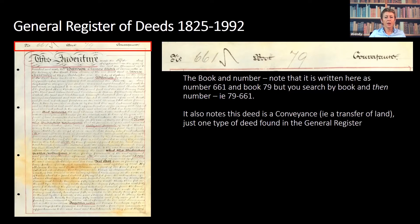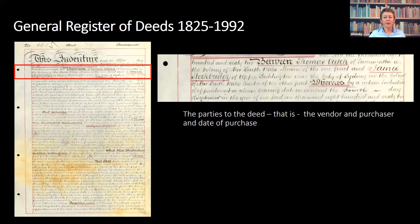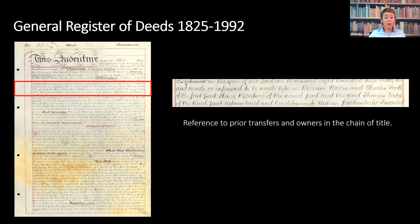On the right, it simply tells us that it's a conveyance — a transfer of land — which is just one of the types of deeds you'll find in the general register. The next paragraph talks about the parties to the deed: Thomas Veitch, who lives at Parramatta and is a mason, is on the first part — that is, the vendor. On the second part, or the purchaser, is James Stockbridge, who lives at Upper Paddington and is a carter. The next section refers to prior transfers and owners of this parcel of land, providing names such as William Wallace, Charles Scott, and Henry Robertson — very useful, though unfortunately it doesn't provide the title deed numbers for those transactions.